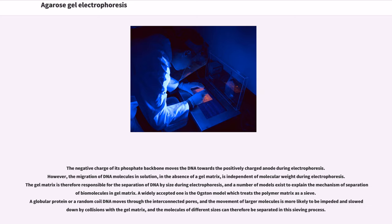The negative charge of the phosphate backbone moves the DNA towards the positively charged anode during electrophoresis. However, the migration of DNA molecules in solution, in the absence of a gel matrix, is independent of molecular weight during electrophoresis. The gel matrix is therefore responsible for the separation of DNA by size. A widely accepted model is the Ogston model, which treats the polymer matrix as a sieve. A globular protein or a random coil DNA moves through the interconnected pores, and the movement of larger molecules is more likely to be impeded and slowed down by collisions with the gel matrix, and molecules of different sizes can therefore be separated in the sieving process.